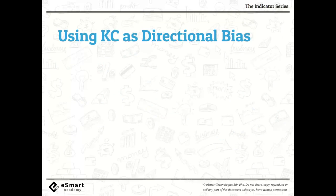Now let's put the pieces together and construct a trading strategy. The first thing you want to determine is direction — your directional bias. Before you decide where or when to execute a trade, you need to determine whether you want to buy or sell. From any analysis, the first step is to establish a bias: are you looking to buy or to sell? We can use KC to help determine this.